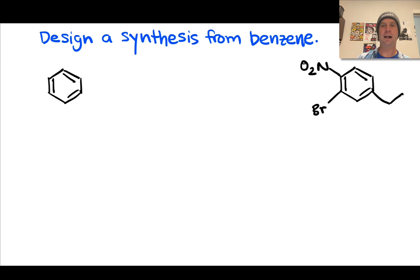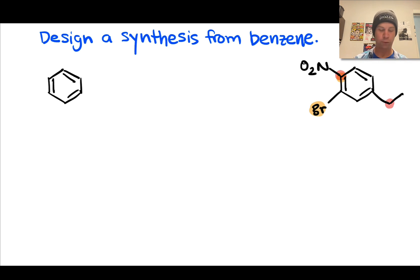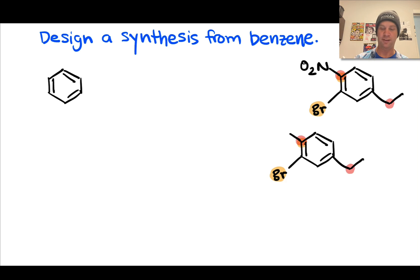We need to be clever. In the final target, bromine donates by resonance and is an ortho/para director, and the alkyl group is also an ortho/para director. The nitro group's position is para to the ethyl group and ortho to the bromine — a reinforced position. Working backwards, we can reach a benzene without the nitro group and rely on nitration occurring at that desired reinforced position.